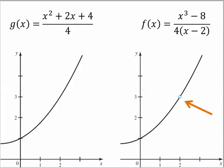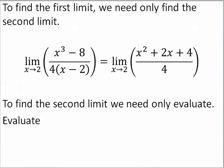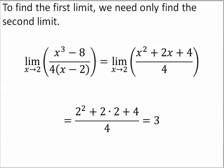However, the expression can be simplified and we find that f equals g as long as x doesn't equal 2. Now look at g. For g, 2 is in the domain of g. And so we can evaluate g of 2. So that's what we do. To find the first limit, we need only find the second limit. To find the second limit, we need only evaluate. And when we do that, we get 3.